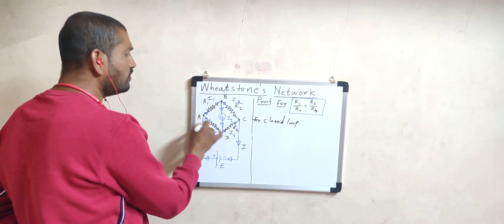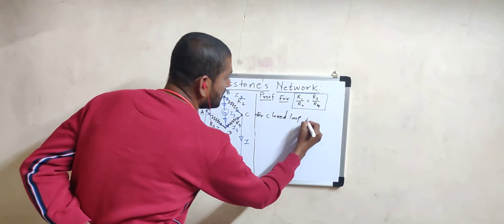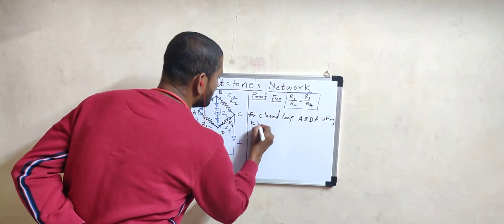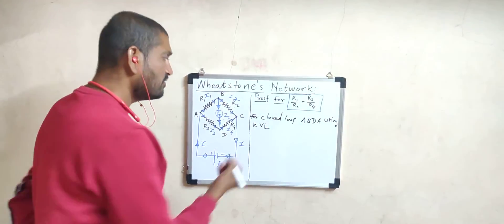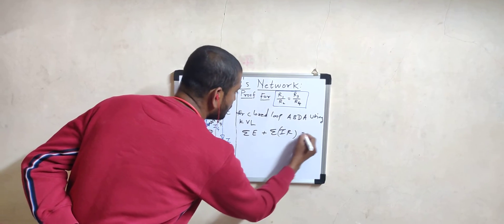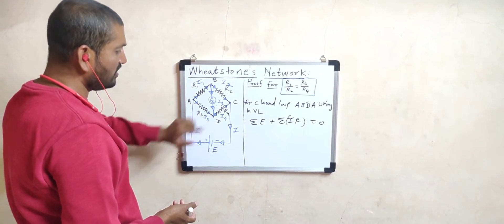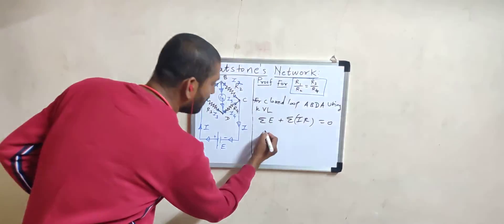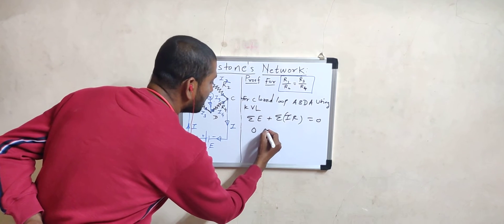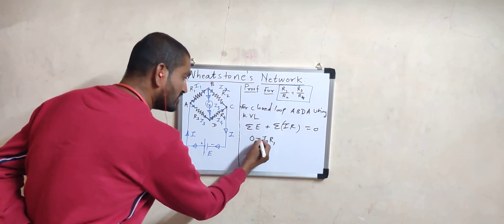Applying KVL to closed loop A-B-D-A: sigma EMF + sigma IR = 0. There is no cell in any of the branches A-B, B-D, or D-A, so sigma EMF is zero. From A to B, resistance is R1 and current is I1, so the product is I1·R1 — taken as negative because current flows in the same direction as the loop. For middle branch B to D, the galvanometer has resistance G and current IG, so the product is IG·G, also negative. For branch D to A, resistance is R3 and current is I3, so the product is +I3·R3, positive because the current flows opposite to the loop direction. Setting this equal to zero per KVL.